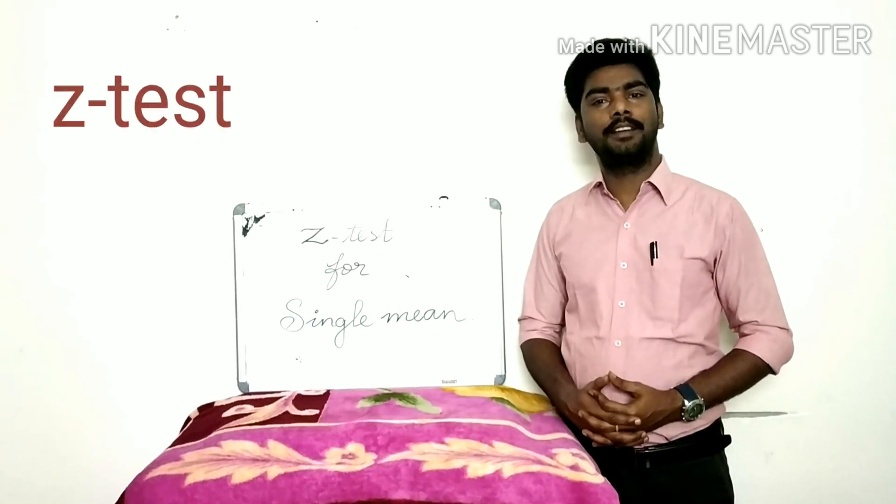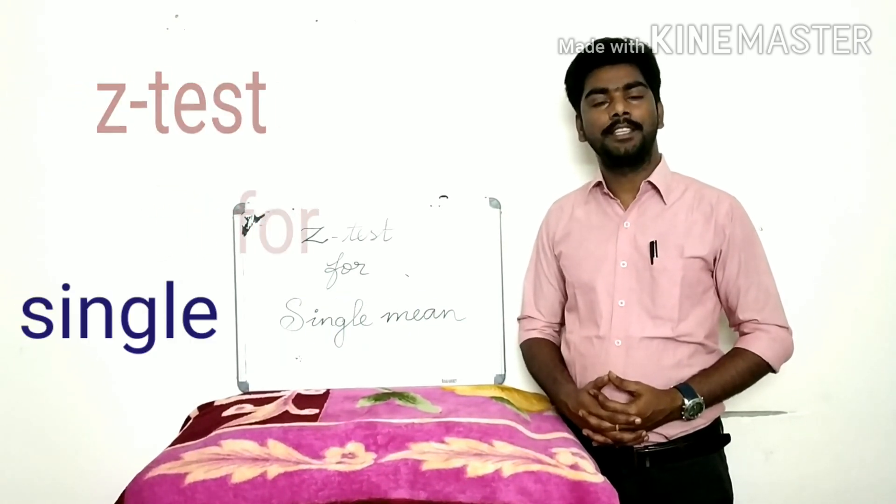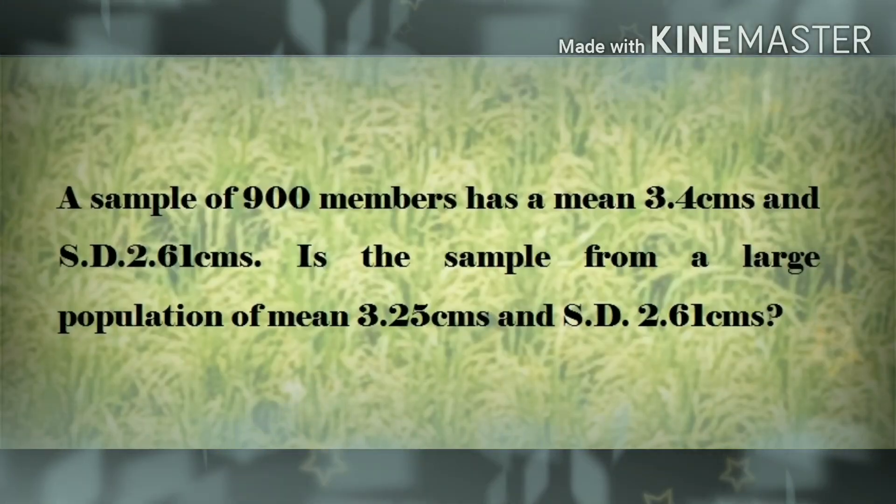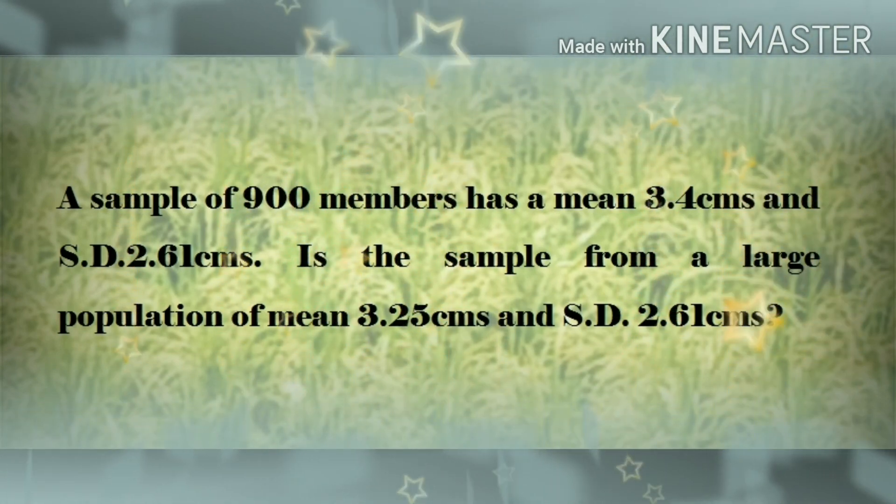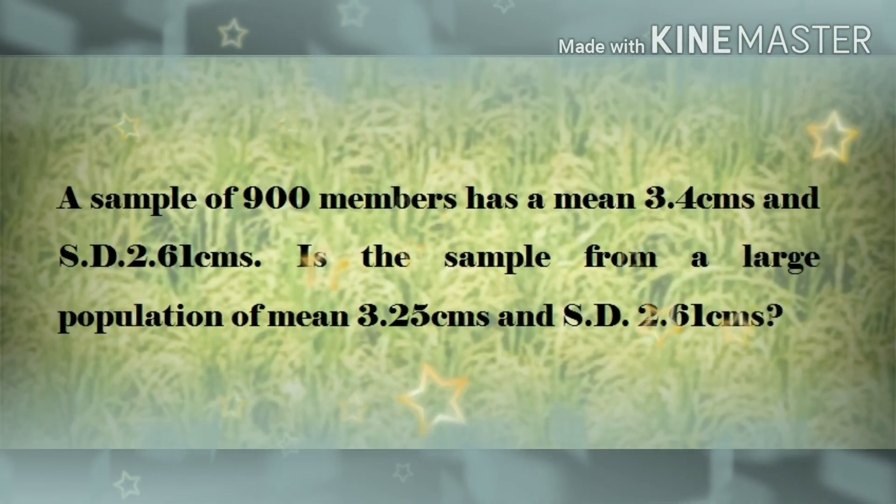Today we are going to learn Z test for single mean. A sample of 900 members has a mean 3.4 cm and standard deviation 2.61 cm. Is the sample from a large population of mean 3.25 cm and standard deviation 2.61 cm? Test at 5% level of significance.